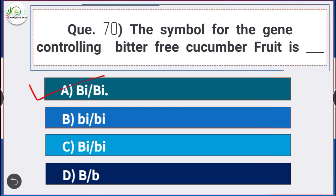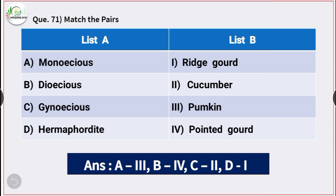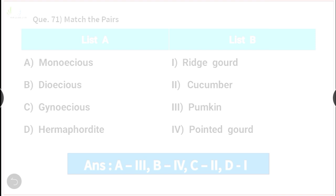Question number 71: Match the following. The correct matches are: pumpkin is monoecious in nature, pointed gourd is dioecious in nature, cucumber is gynoecious in nature, and ridge gourd is hermaphrodite in nature.